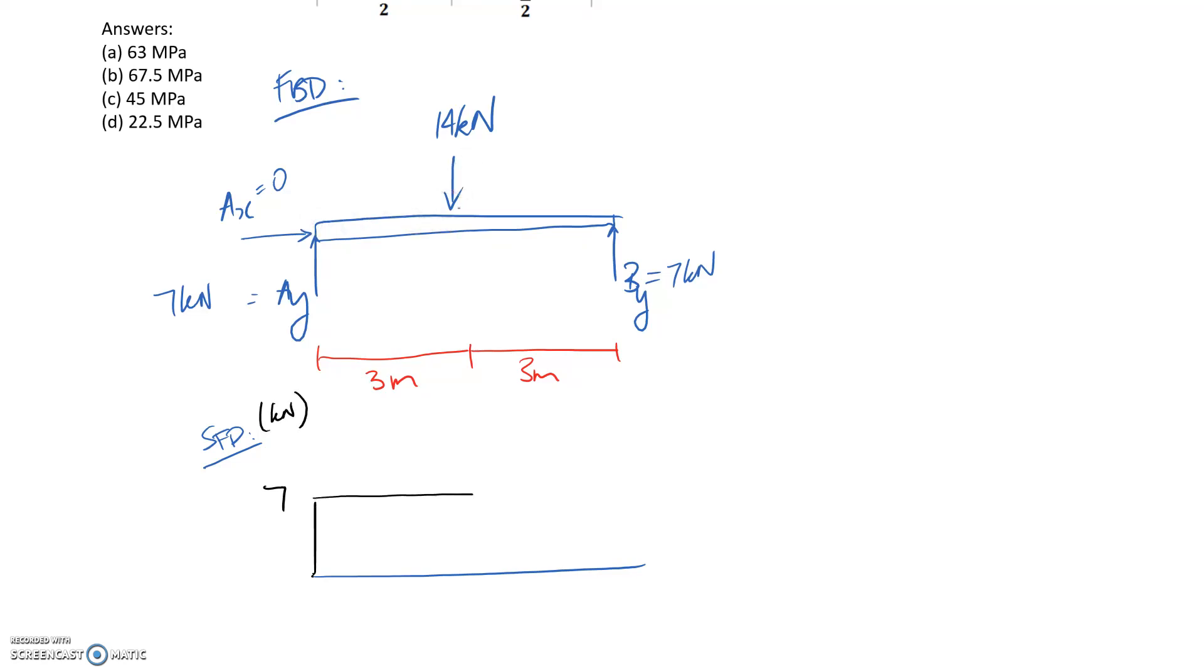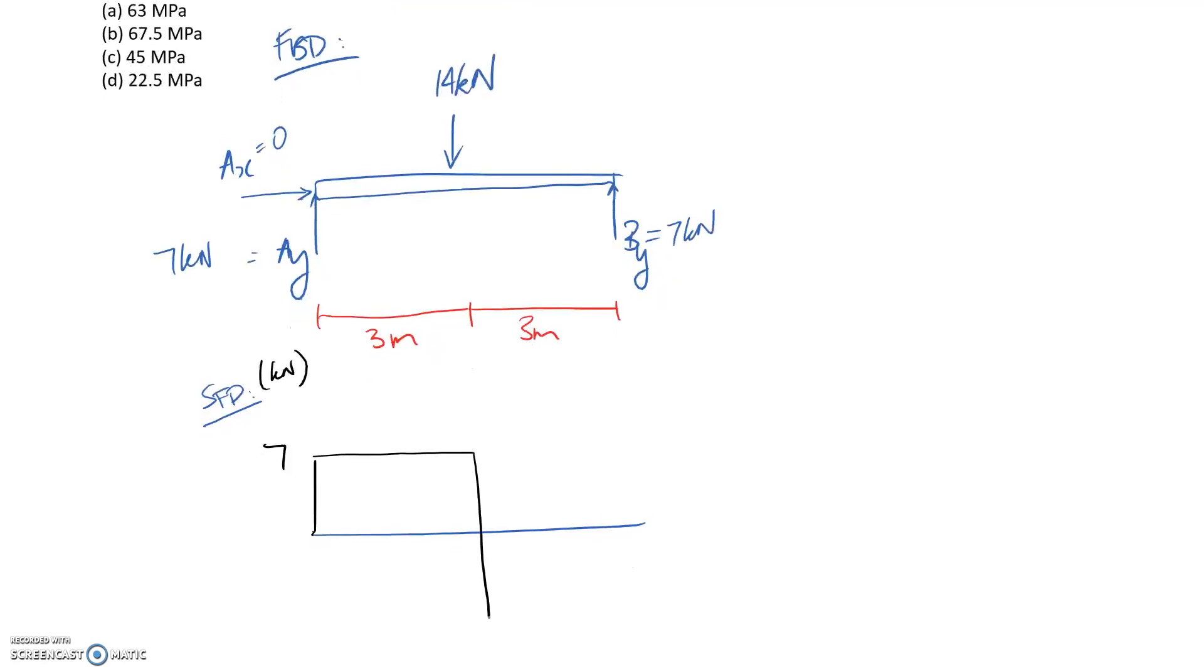Nothing happens through here, so it's going to remain flat. At this point though, we hit a 14 kilonewton downward force. So that means that it's going to push us down. It's going to be 7 minus the 14, which leaves us at negative 7. Again, nothing happens through here, so it's going to remain flat. And then at the end, we're pushed up 7, which takes us back to 0. So as expected, we're starting and finishing at 0.